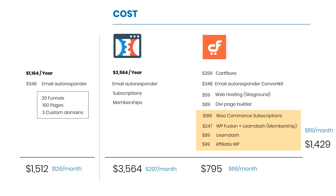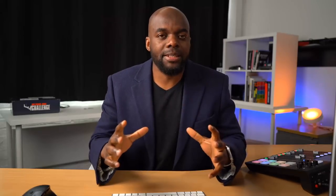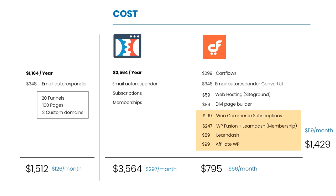Looking at pricing, ClickFunnels is an all-in-one platform with email autoresponder, subscriptions, and memberships — no hosting worries — at $297 per month, or $3,564 per year. For CartFlows, you need to stack components: CartFlows plugin, an email autoresponder like ConvertKit at $348/year, hosting from SiteGround at $59/year, and a page builder like Divi at $89/year. Just for funnels, that totals $795 per year.